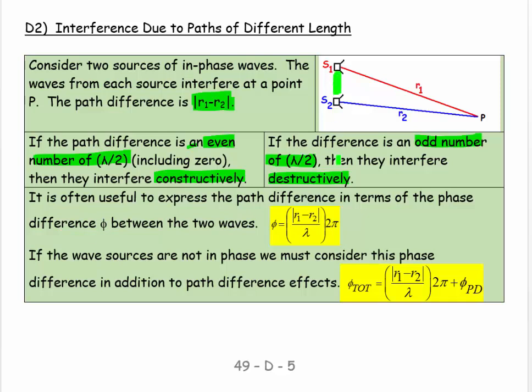The phase angle would be the path difference divided by the wavelength. That gives you the number of wavelengths difference rather than being in meters. Then if we want to take it into phase angle, for each wavelength we multiply by 2π.